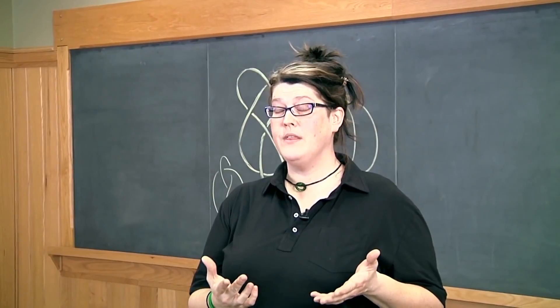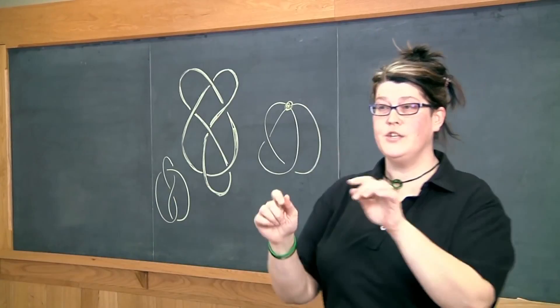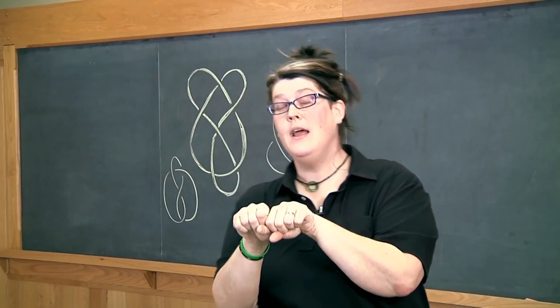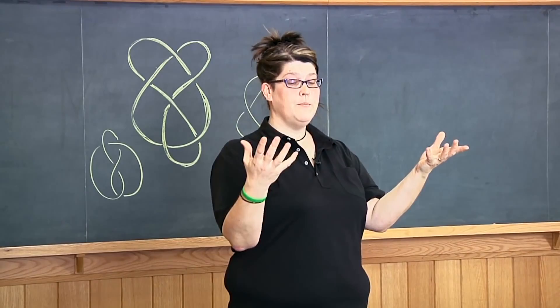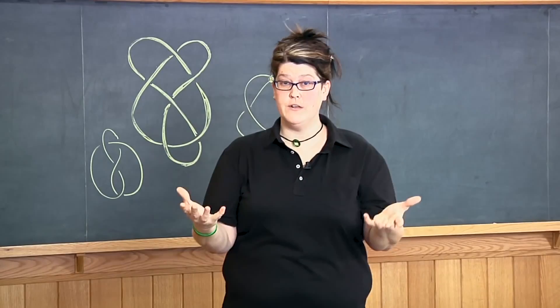So the example I want to use to start out with is that of knot theory and you see behind me some knots drawn on the board. A knot is just a string that's been knotted up in some way and then the ends have been attached together again. And the kind of thing we want to know about with knots is when are two knots the same and when are two knots different. So if I take a piece of string and I tie it up in one way and I take another piece of string and tie it up in another way how can I tell if those are the same knot or if those are different knots.